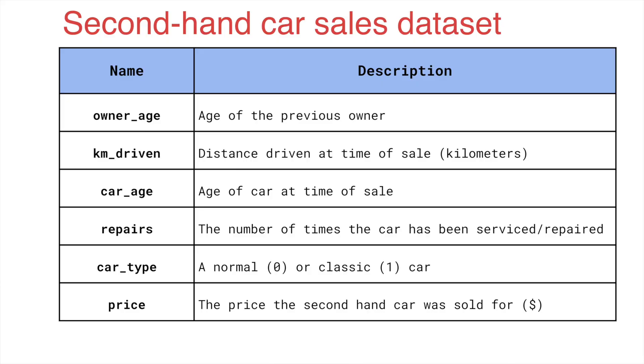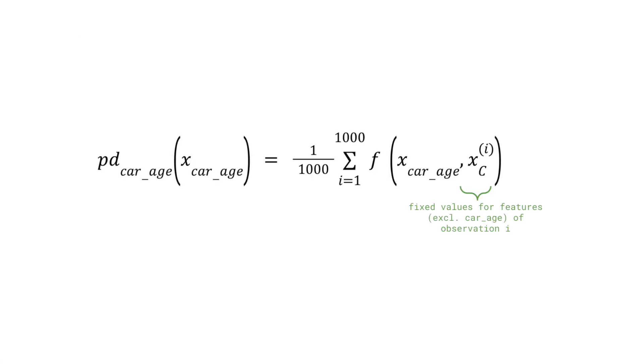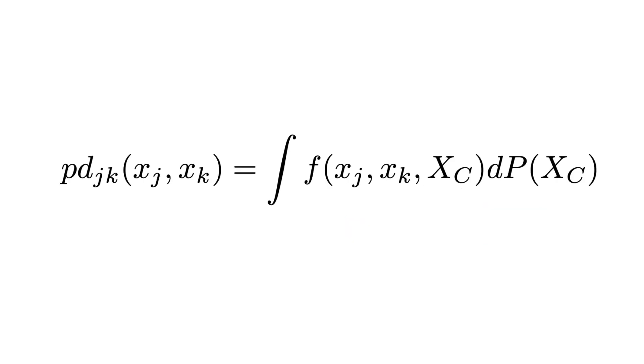To do this, we'll use some plots from a previous video: PDPs and ICE plots. We built a model to predict the price of a second-hand car using features like age of the car and its type, and visualized relationships using PDPs and ICE plots. The H-stat builds on the formula of a joint PDP.